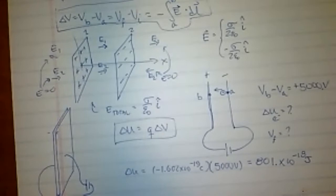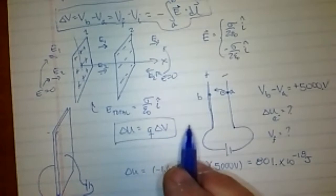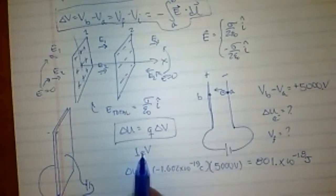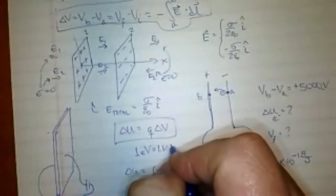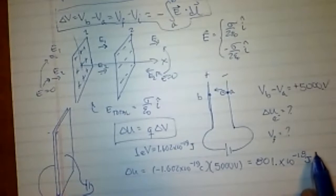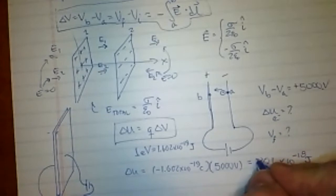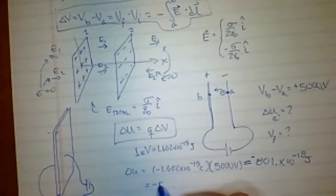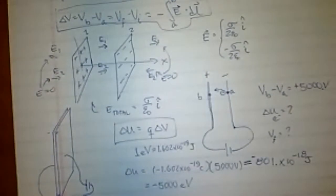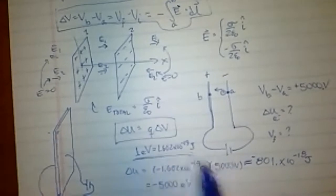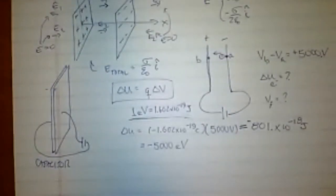A volt is a joule per coulomb, so multiplying by coulombs gives joules. There's a better unit called the electron volt: one electron volt equals the charge of an electron times one volt = 1.602 × 10⁻¹⁹ joules. So ΔU = −5,000 electron volts. This unit is really valuable when working with electrons, protons, and neutrons.